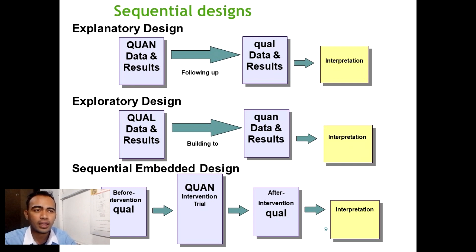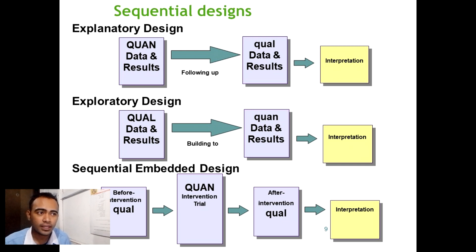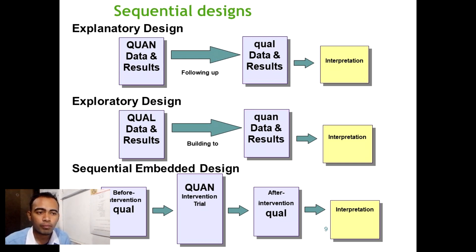We have three designs for the mixed method: the explanatory design, exploratory design, and sequential embedded design. For the explanatory design, we first gather the quantitative data, then the qualitative data, and then the interpretation of the data. For the exploratory design, we first gather the qualitative data, then build to the quantitative data, and then the interpretation of the data. For the sequential embedded design, before we go to the quantitative we need the qualitative first, then the quantitative intervention trial, then qualitative again, and finally the interpretation of the data.